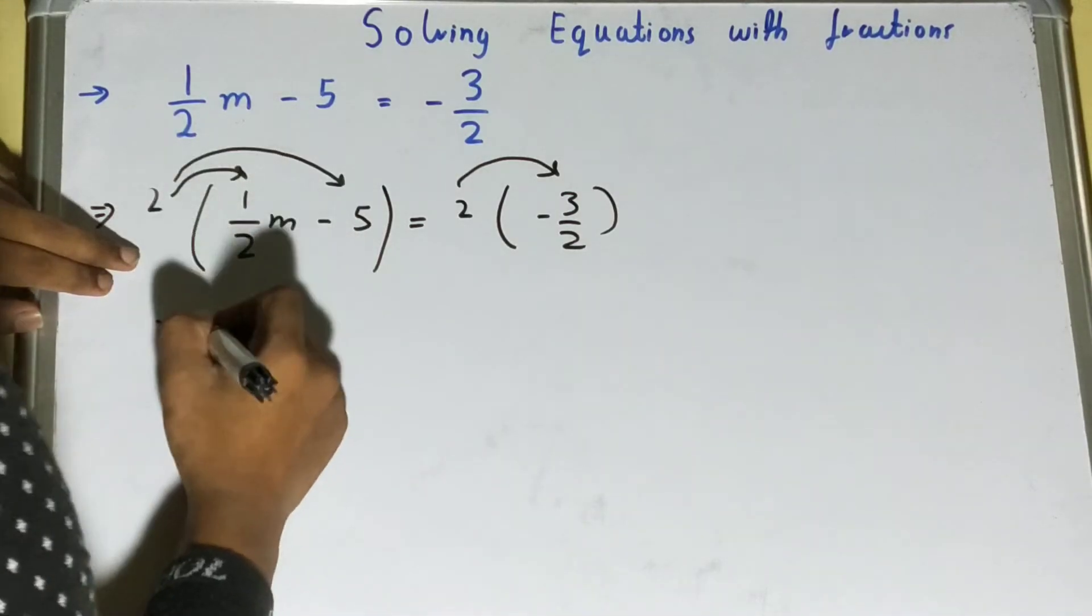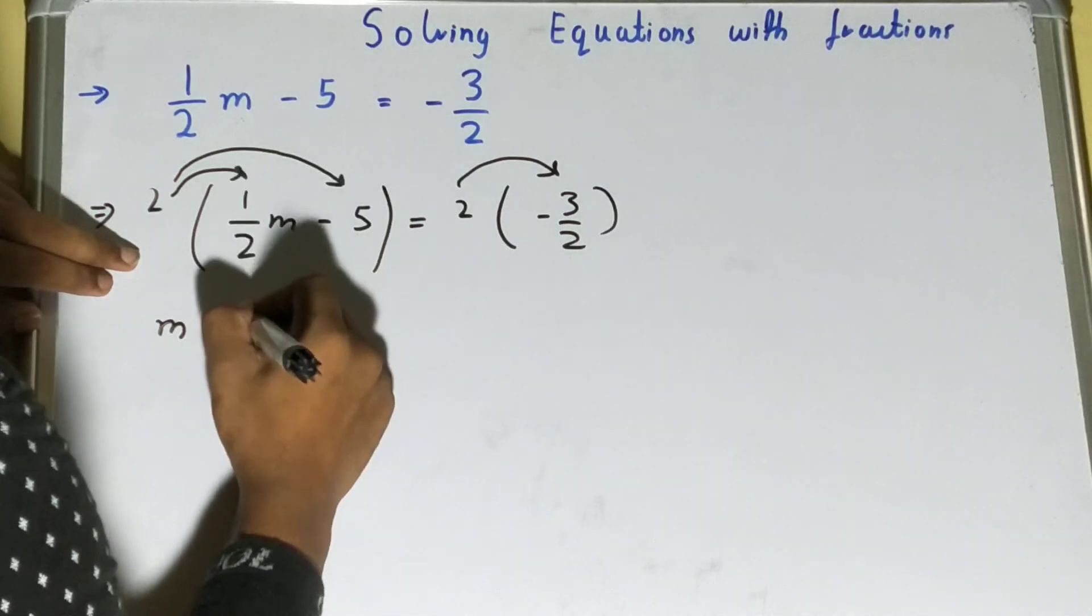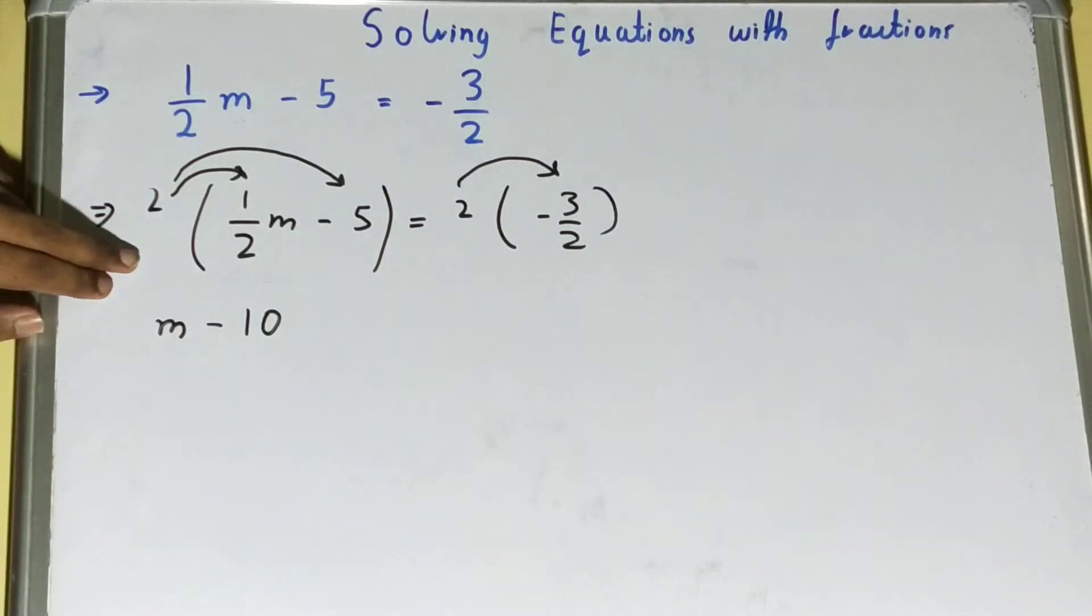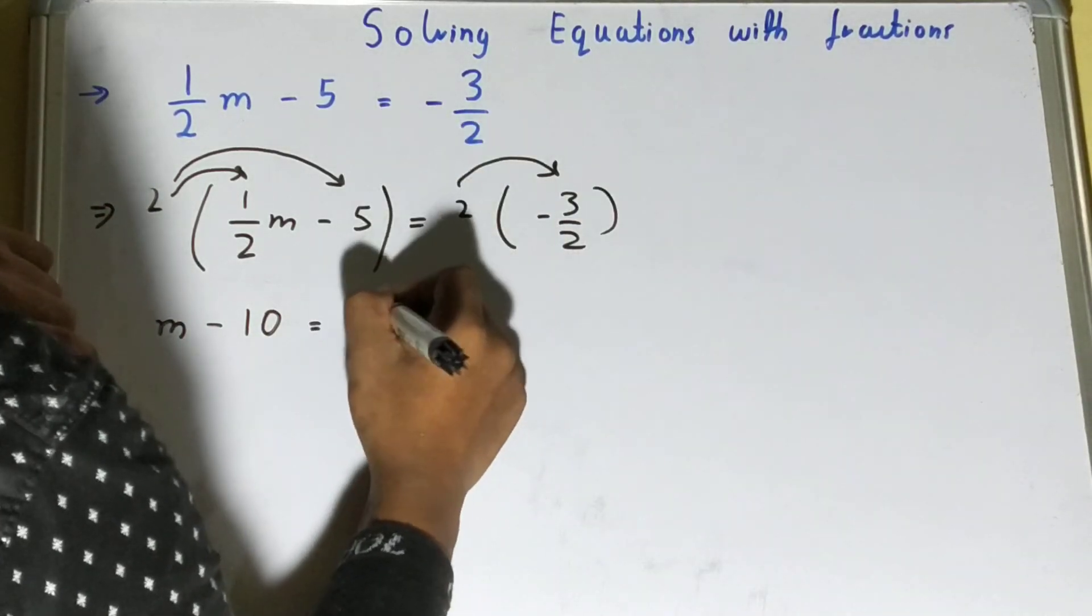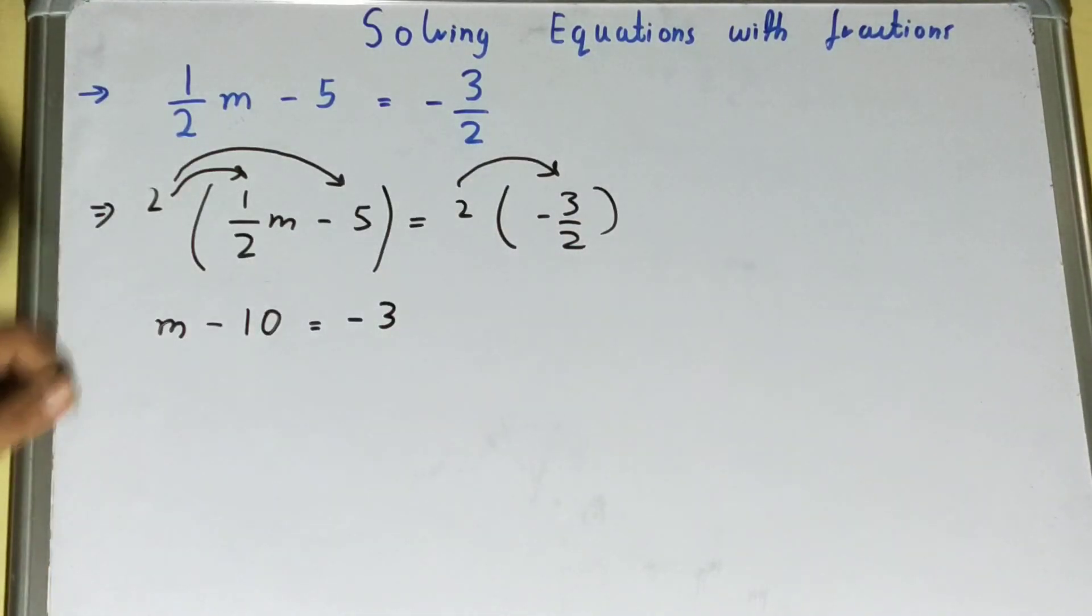Two and two will be cancelled, and this will become ten. Five twos are ten, right? Let's see on this side. On this side, two and two will cancel and it will be left with minus three.